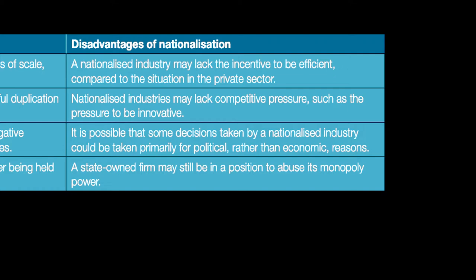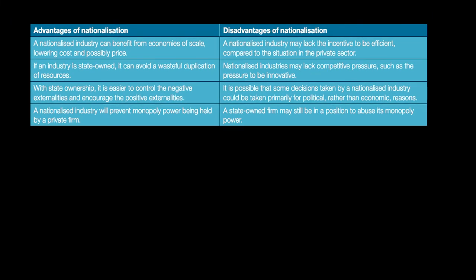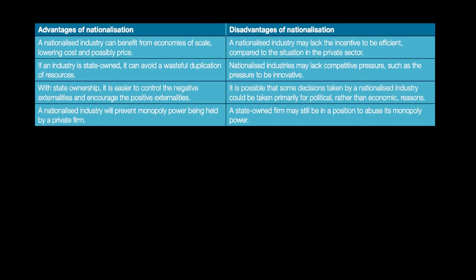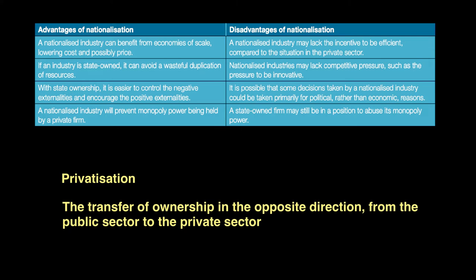If a state-run organization decides to act as a monopoly, then consumers will be unhappy because they have to pay much higher prices and have no power to control it. Whereas nationalization transfers ownership from private to public sector, privatization refers to the transfer of ownership in the opposite direction — from public sector to private sector. The idea is that when resources are owned by the private sector, there will be better efficiency in the allocation of resources. If a state-owned firm is not as efficient as possible, the government may privatize it.